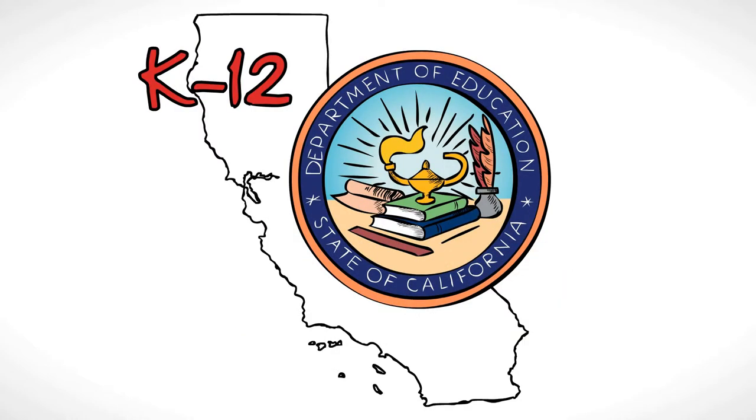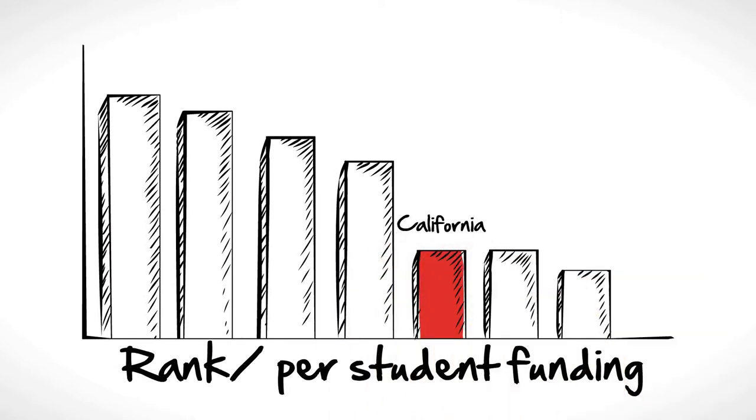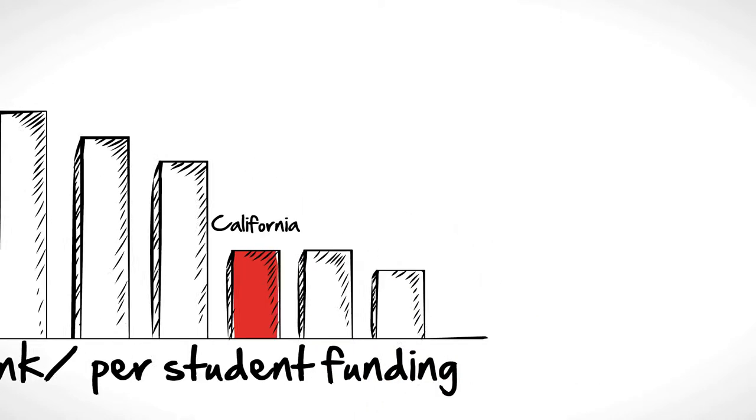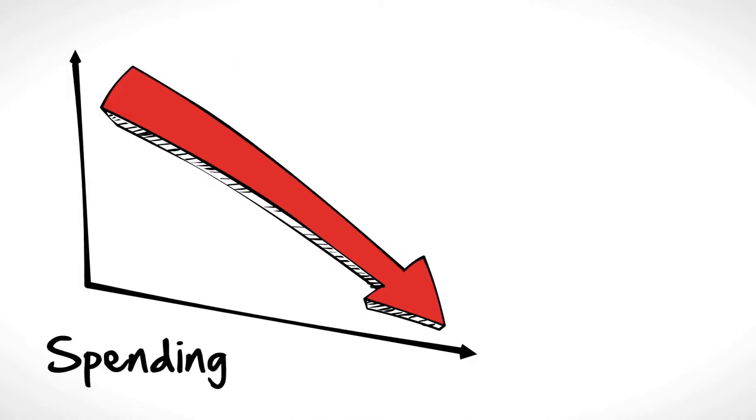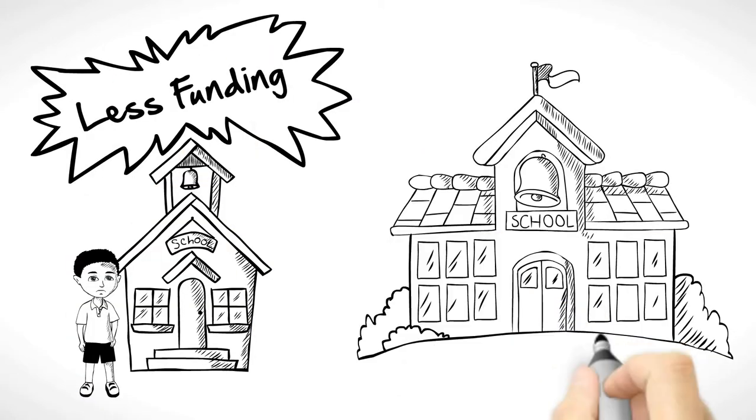K-12 education in California is in crisis. Not only does California rank near the bottom in per-student funding, and spending has been drastically cut, but students in low-income schools receive less funding than kids in well-to-do neighborhoods.